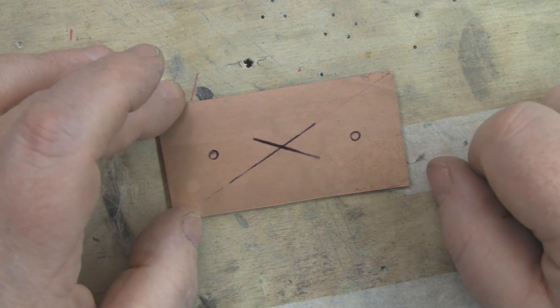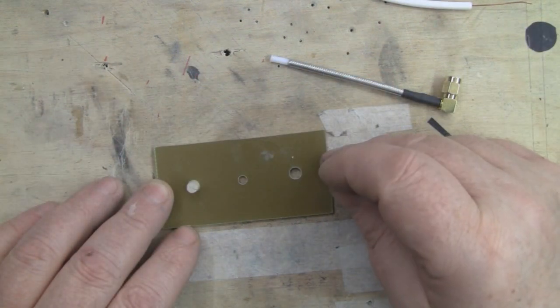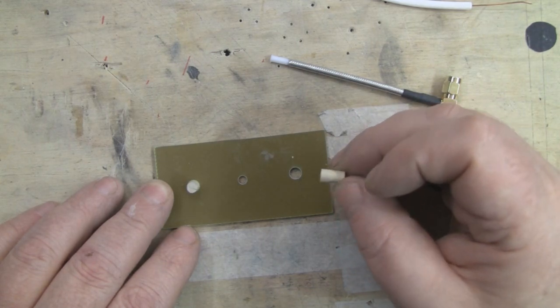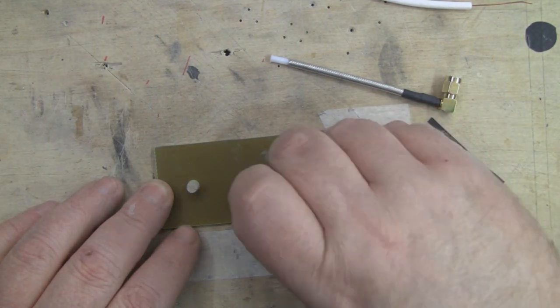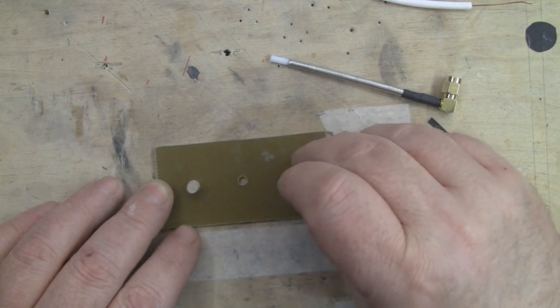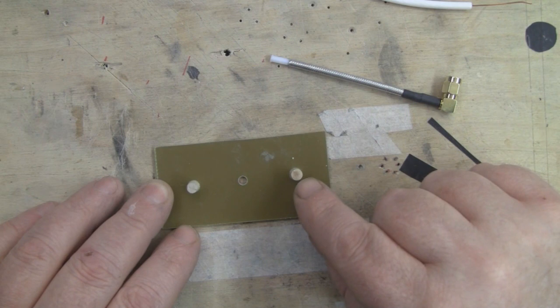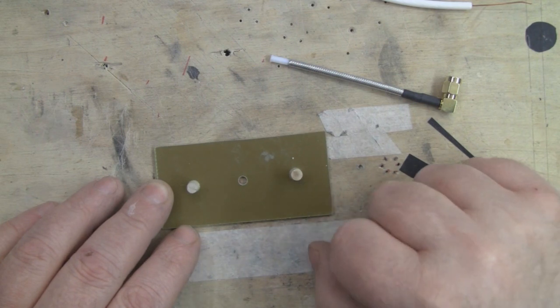Now that I've got the holes cut in my back reflector, what I'm going to do next is use a little bit of super glue and mount my little spacing dowels into the reflector first before I do anything else. The gap between the reflector and the driven element at the front wants to be 6.5mm.